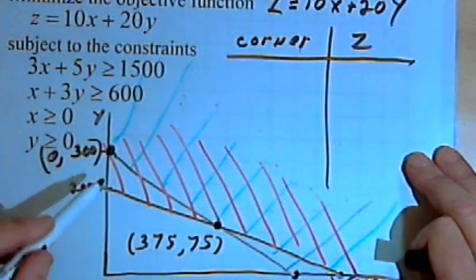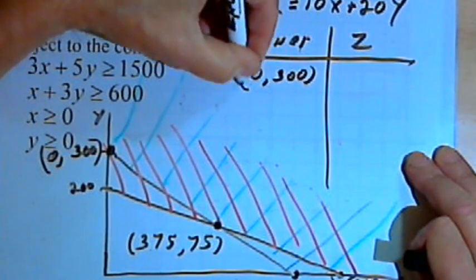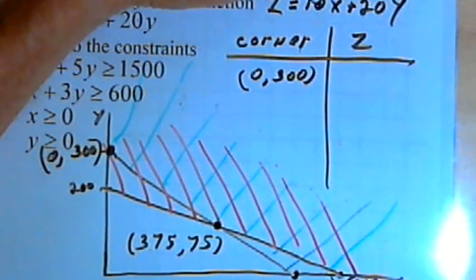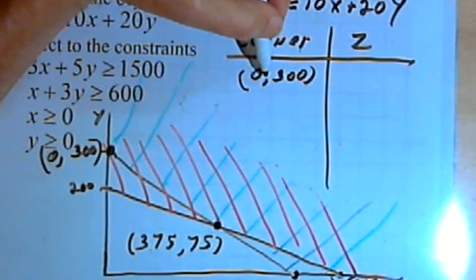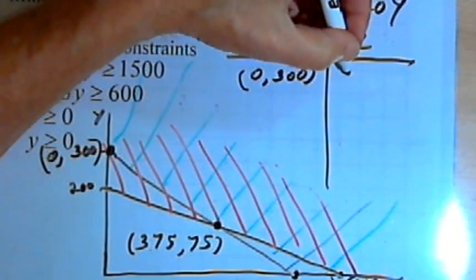I've got a point at x is 0, y is 300. So I've got 10 times 0 is 0, plus 20 times 300 is 6,000.